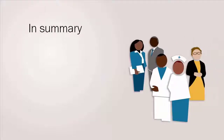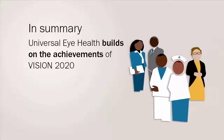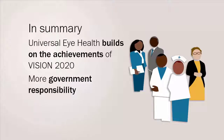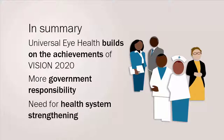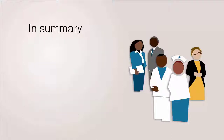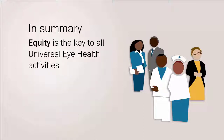In summary, Universal Eye Health has clear and specific goals which build on the achievements of the Vision 2020 initiative. There is more responsibility at government level, and the Global Action Plan relies on health system strengthening to deliver a comprehensive eye care service. Finally, equity is the key to all Universal Eye Health activities. Thank you for joining us.